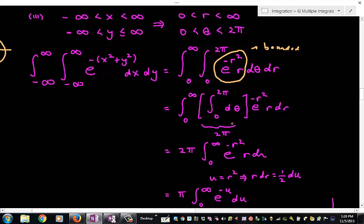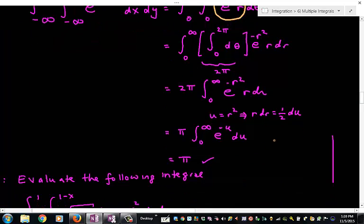Since it's bounded, I'm going to change the order of integration. The first integral in d theta is easy because this evaluates to 2 pi. The second integral is not that difficult because I can use the change of variables u equals r squared. This final integral just evaluates to 1. So I'm going to get pi.